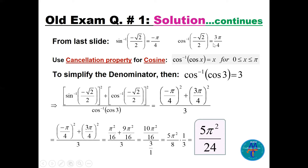Now we square the first angle: (−π/4)² = π²/16, and square the second: (3π/4)² = 9π²/16. Adding gives 10π²/16. Divided by 3, we get 10π²/48, which simplifies to 5π²/24. The final answer is 5π²/24.